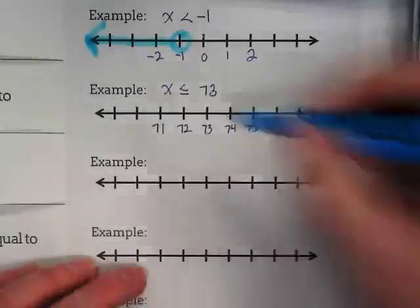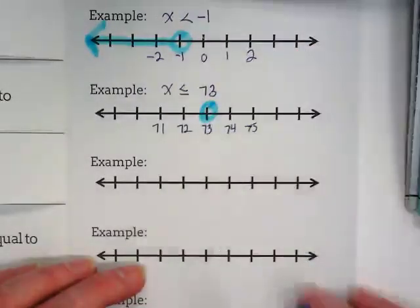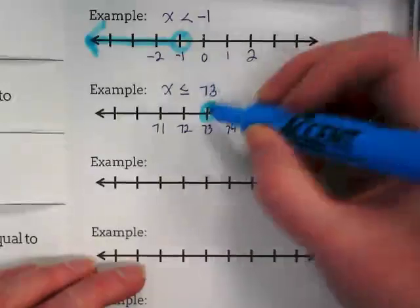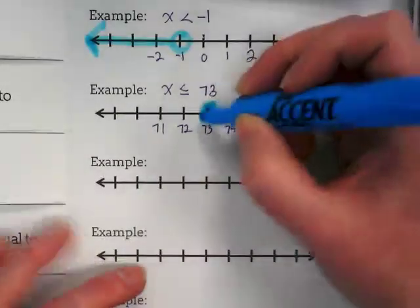Okay, we're going to circle the 73. It is less than or equal to 73. That means we have to include the 73. So it's a closed circle. And it goes to the left.